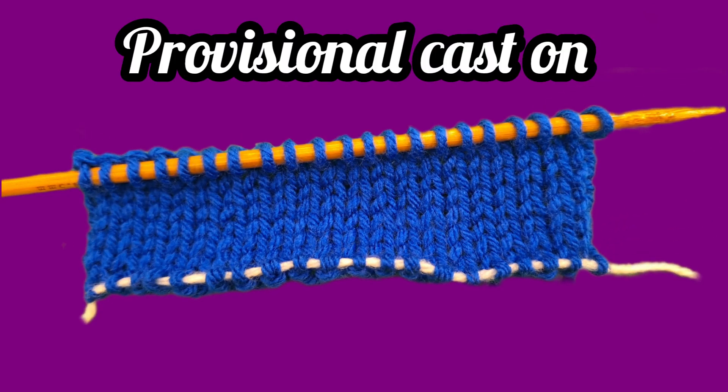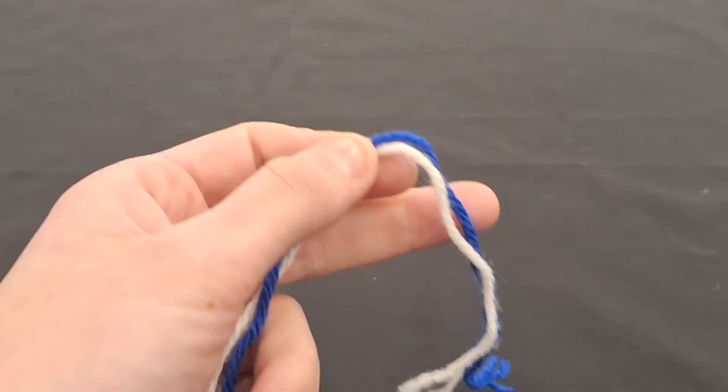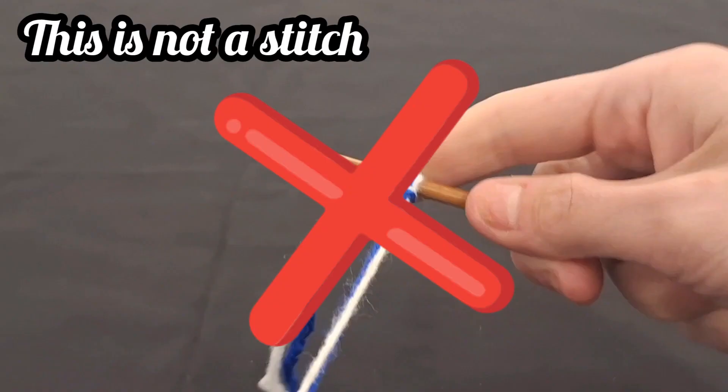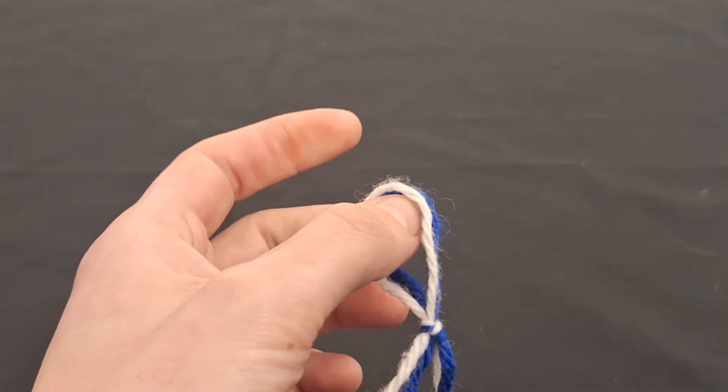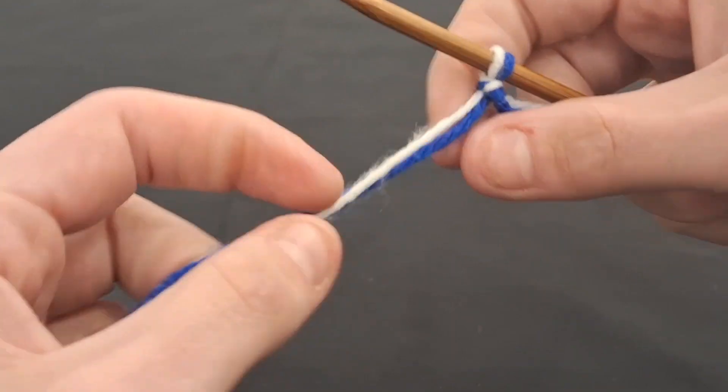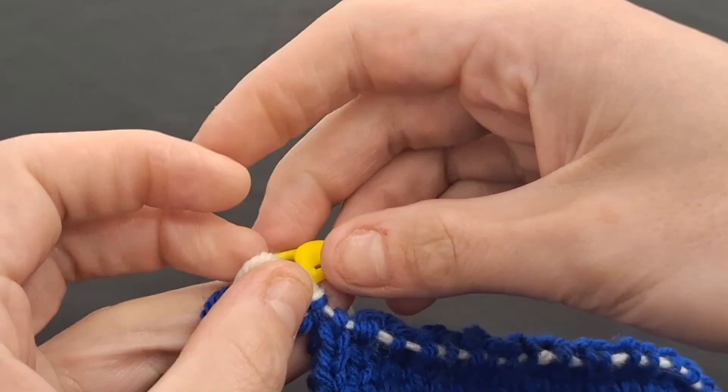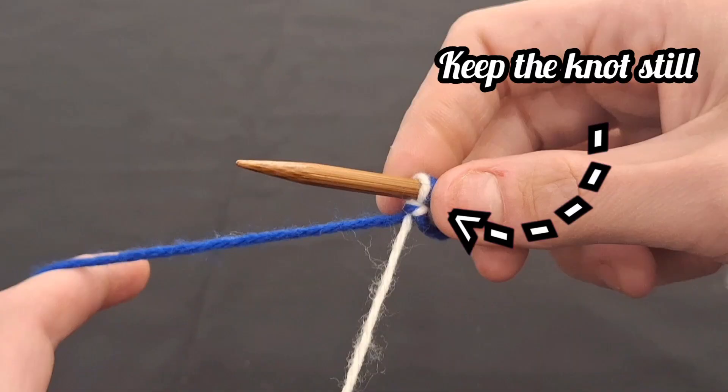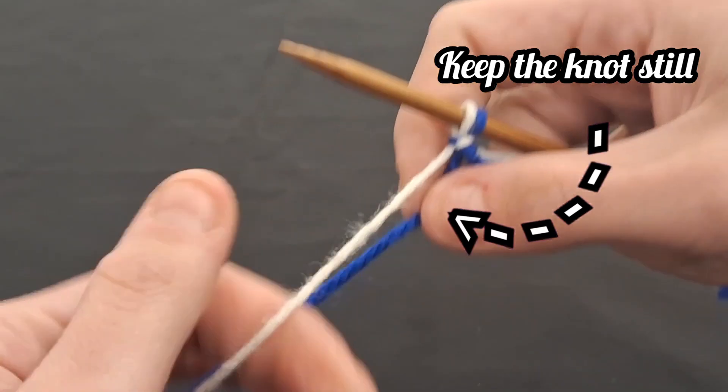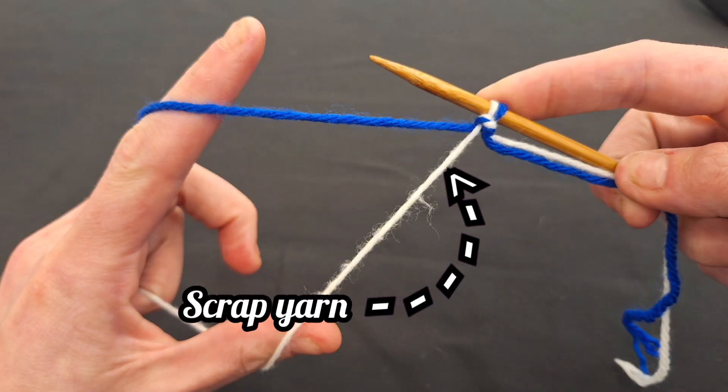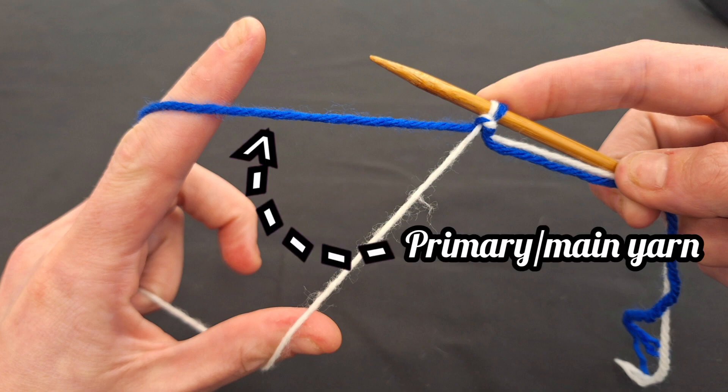Provisional Cast On Single Line. Tie the scrap and main yarns together at the beginning with a slipknot. Be informed this will not be a stitch. When doing so, ensure that the tails create the loop you are going to be placing onto the needle. This will enable you to easily undo the slipknot and remove the yarn. While holding down the knot with your thumb and or index finger of the hand holding onto the needle, hold the yarn such that the scrap yarn is closest to you, going over your thumb, and your primary yarn travels over your index finger.